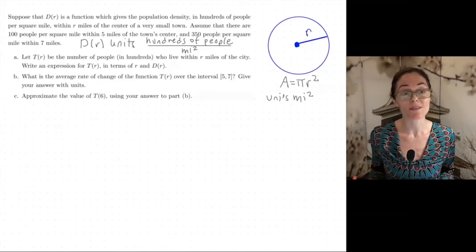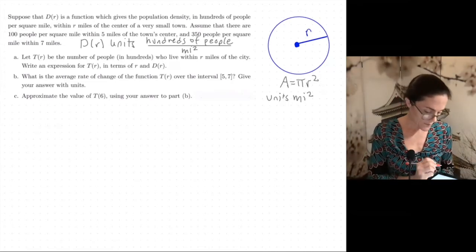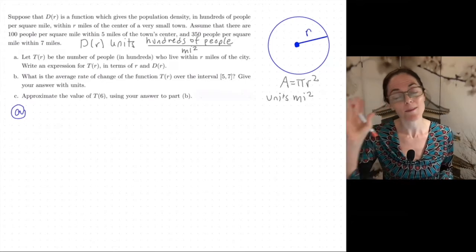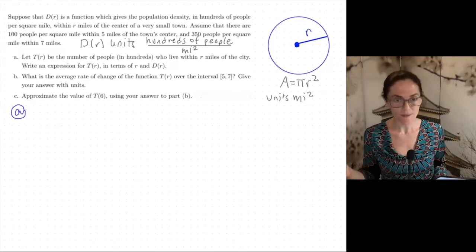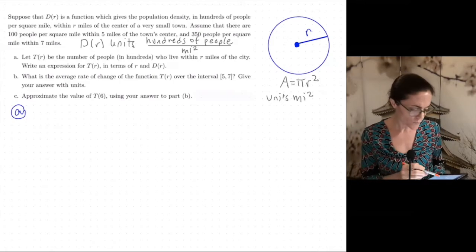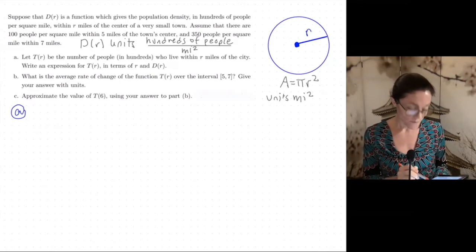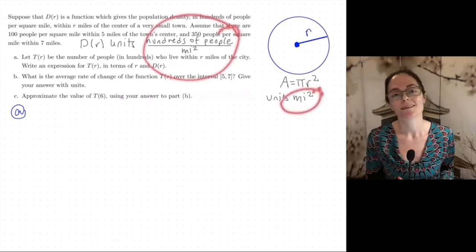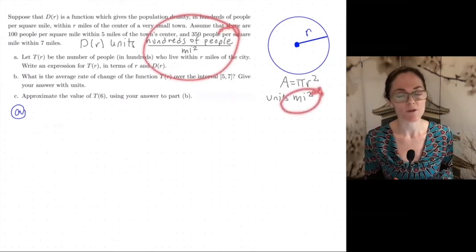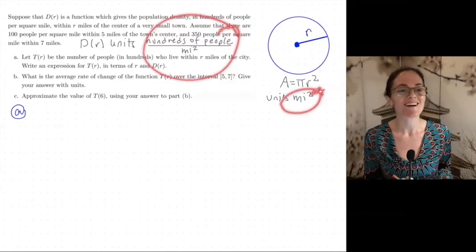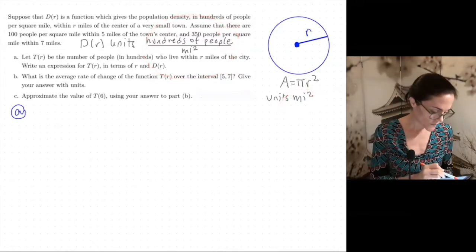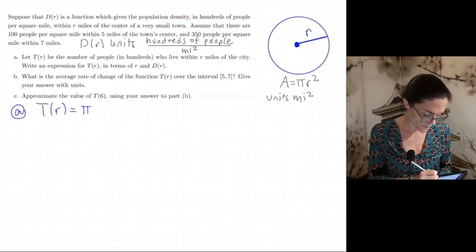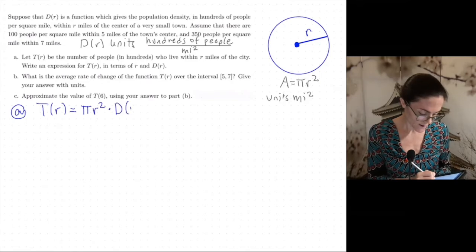And just thinking about those two things, we are ready for part A, because part A, we want T(r) to be the total number of people in hundreds who live within r miles of the city. And if you notice looking at this, if we just think units, if we have hundreds of people per mile squared times miles squared, we will have units hundreds of people. And that's what we want for the units of T(r).